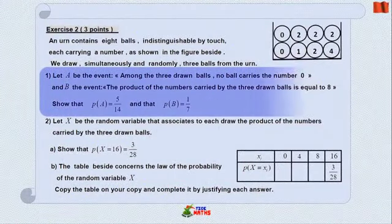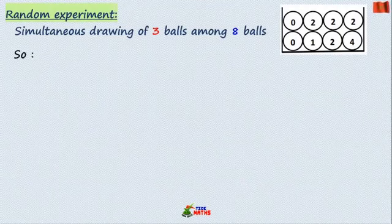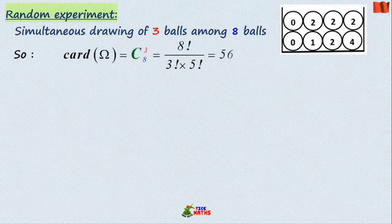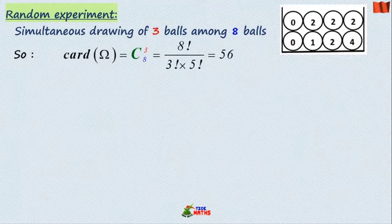Question number one. Note that we have a classical random experiment: simultaneous drawing of three balls among eight balls. Possibilities are combinations of three elements chosen among eight elements. So cardinality of omega equals C(3,8) equals 56.